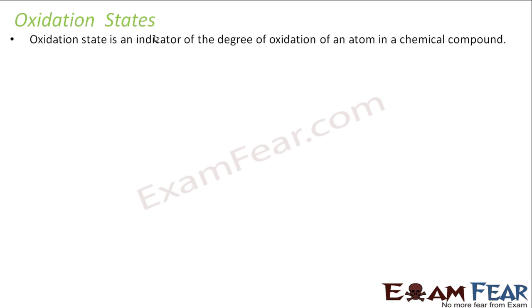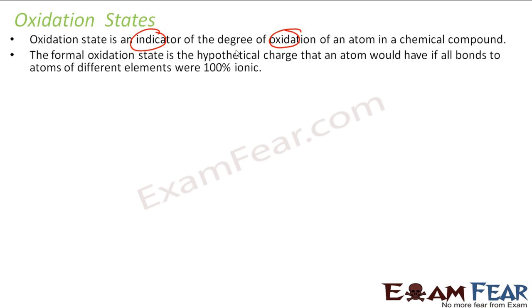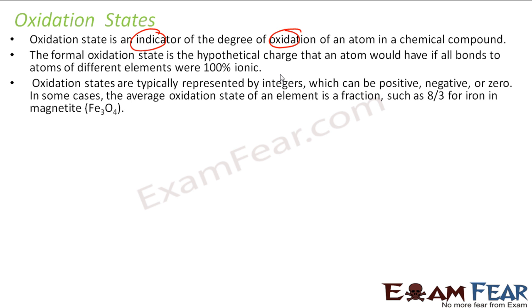First, understand what is the oxidation state. This is nothing but an indicator of the degree of oxidation of an atom in a chemical compound. What does it mean? This is the hypothetical charge that an atom would have if all the bonds were ionic bonds. And this is represented by integers. It can be positive, negative or zero. In some cases it is a fraction also where you take the average.